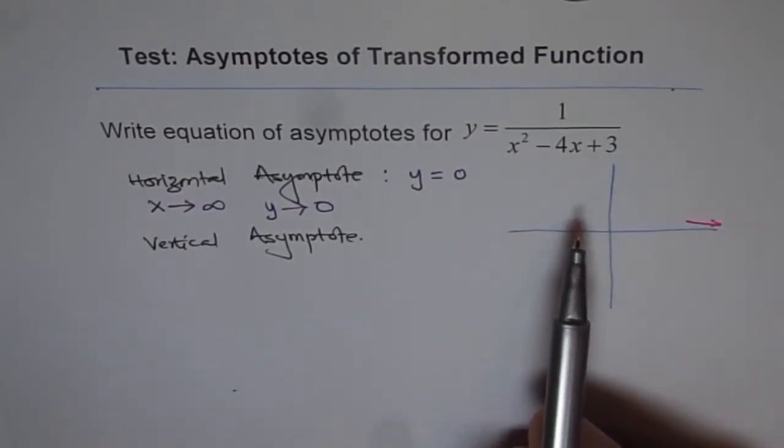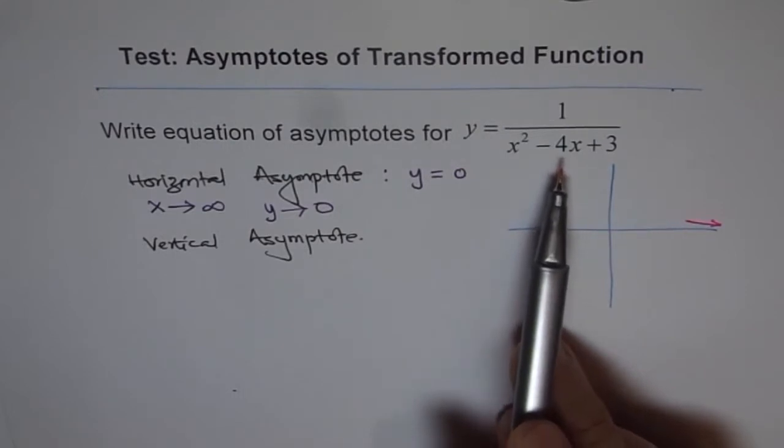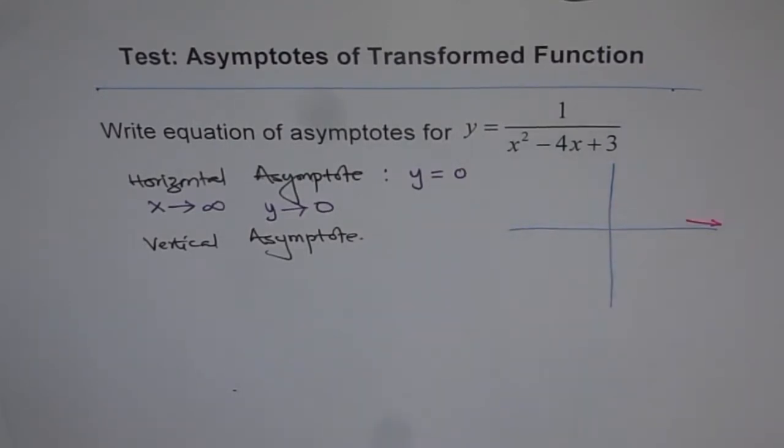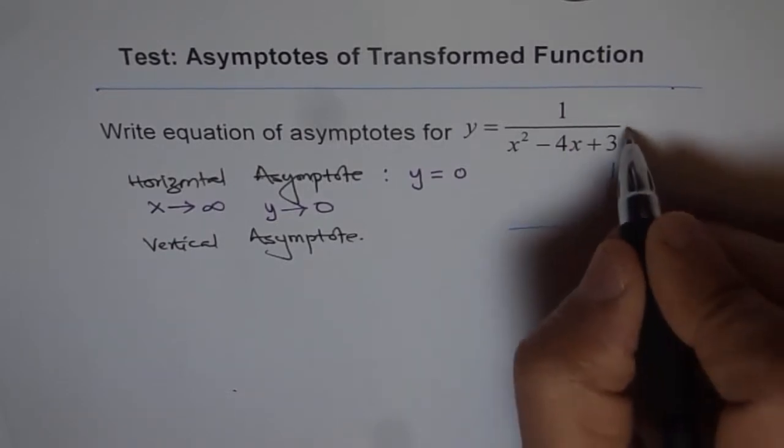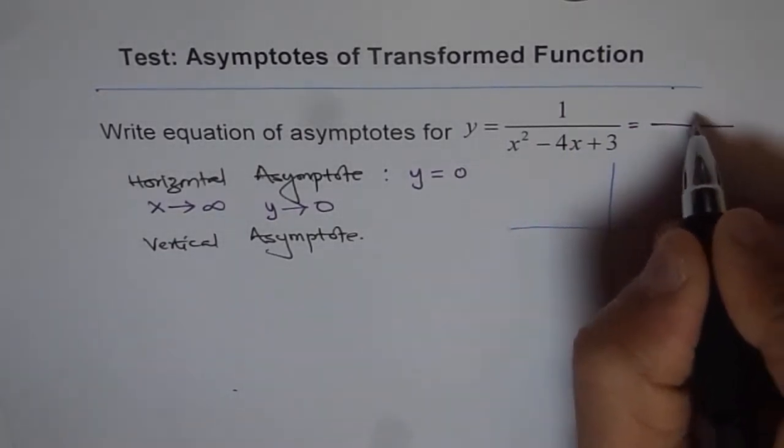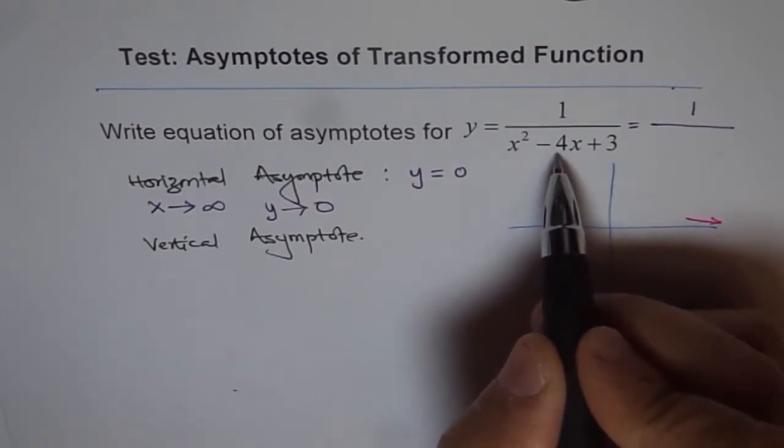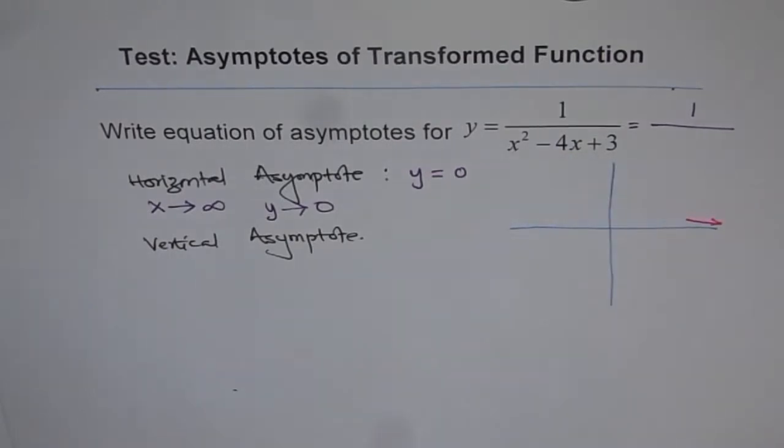Now let's consider this equation in factored form. Let's factor the denominator. The product of 2 numbers should be 3, and when you add them, you get minus 4. The numbers 3 and 1 give you a product of 3 but not a sum of minus 4.